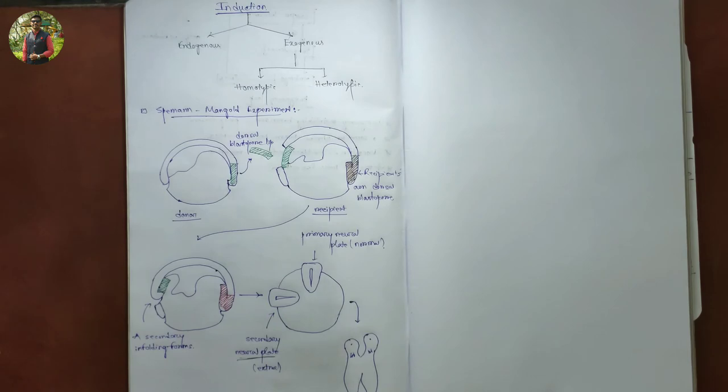In this experiment, the dorsal blastopore lip was removed from the donor and transplanted into the recipient. In the recipient gastrula, the dorsal blastopore lip was invaginated, and after invagination they continue to self-differentiate into notochord mesoderm and other mesodermal structures that constitute the original fate of that blastopore tissue.